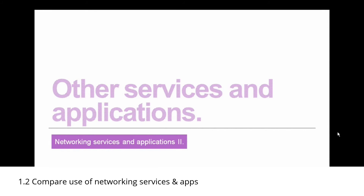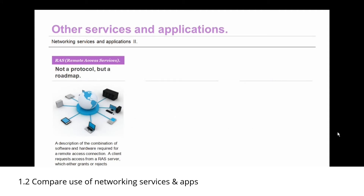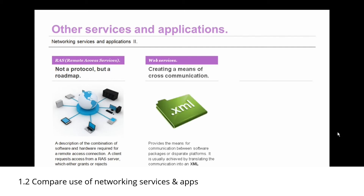Moving on to other services and applications — first up is Remote Access Services. This is not a protocol but a roadmap: a description of the combination of software and hardware required for a remote access connection. A client requests access from a remote access server, which either grants or rejects that access. Then we have web services, which provide the means for communication between software packages or disparate platforms. It's usually achieved by translating the communication into XML format — Extensible Markup Language — and it is becoming more popular as systems diverge.